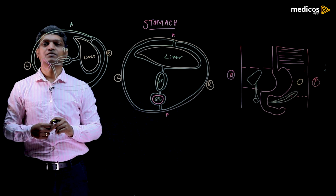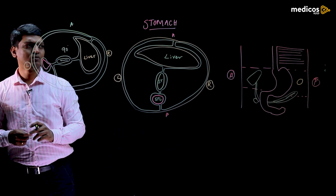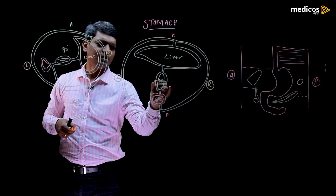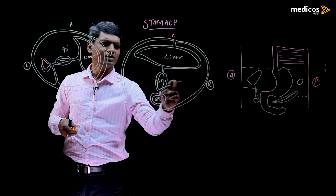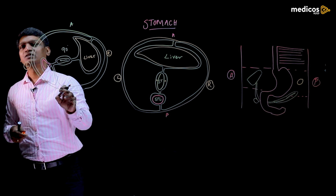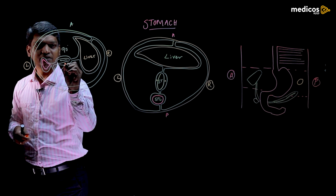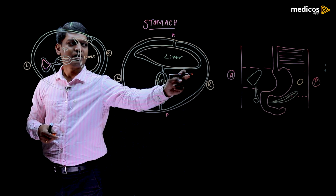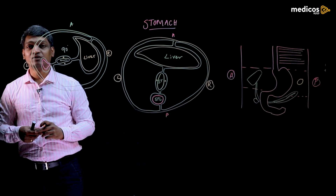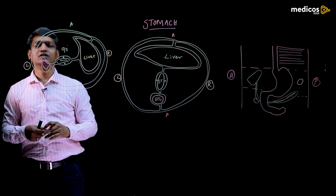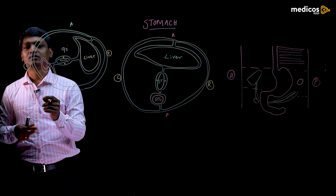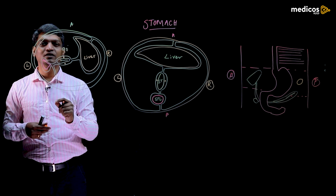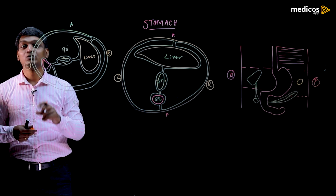The stomach is supplied by the vagus nerve — we have the right vagus and the left vagus. Due to the 90-degree clockwise rotation, the right vagus comes to the posterior and the left vagus goes to the anterior. So in the cadaver, if you open the abdomen and see any anterior trunk present on the anterior portion of the stomach, that is called the left vagus. The posterior trunk is the right vagus — due to the rotation.